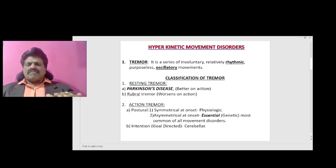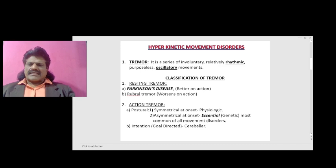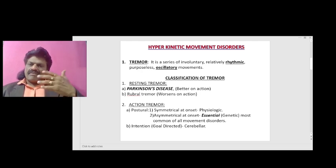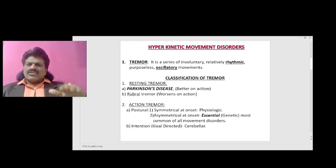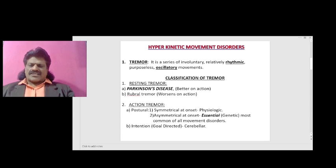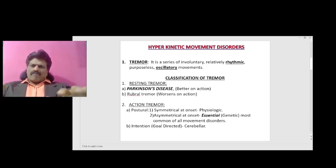Classification of tremor: it can be resting tremor or action tremor. Resting tremor, as the name suggests, is present at rest — the classic example is Parkinson's disease. The tremor improves or even disappears on action, so it is seen during the resting phase. We also have rubral tremor, but it worsens on action.